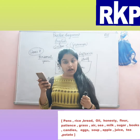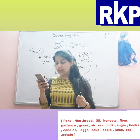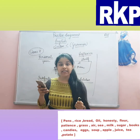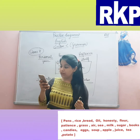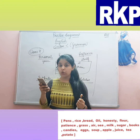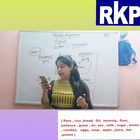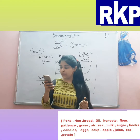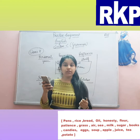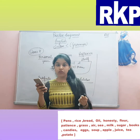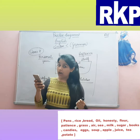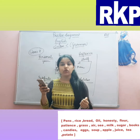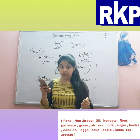Books — countable. Candies — countable. Eggs — countable. Soup — uncountable. Apple — countable. Juice — uncountable. Tea — uncountable. Potato — countable. Clear?